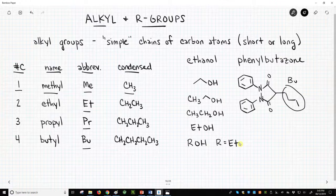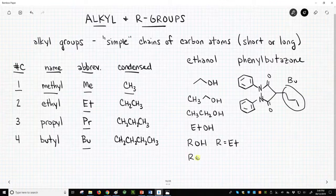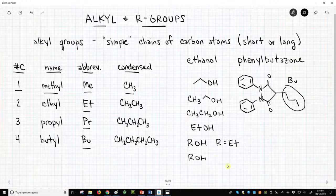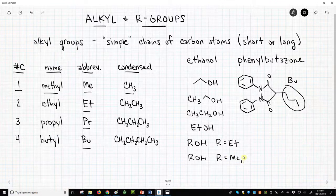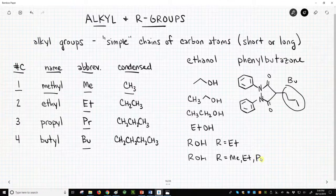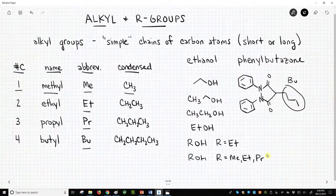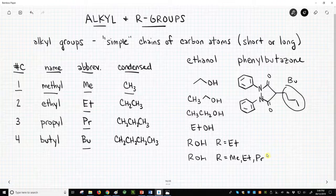We could also draw ROH and now define R to be equal to several alkyl groups such as methyl, ethyl, and propyl. With one picture, we've now drawn three different molecules because the R group can be replaced with three different alkyl groups.